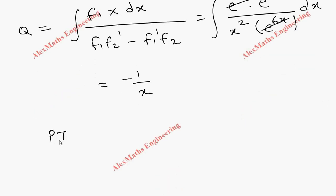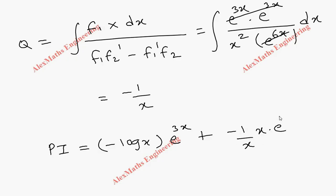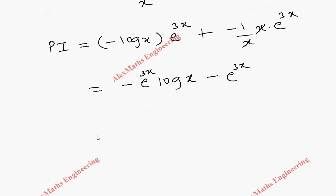Writing the particular integral: PI = p·f₁ + q·f₂ = (-log x)·e^(3x) + (-1/x)·x·e^(3x). The x terms in the second part cancel, giving PI = -e^(3x)·log x - e^(3x).